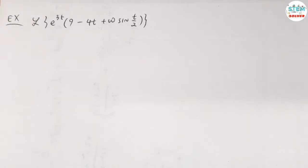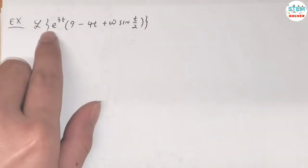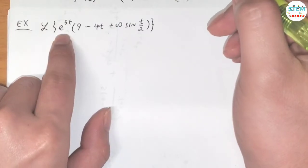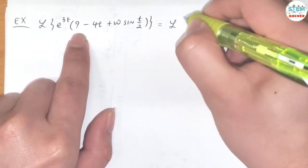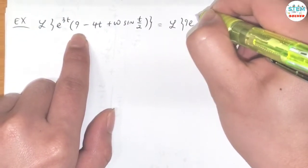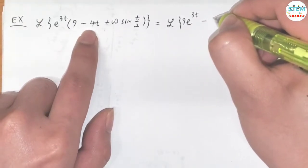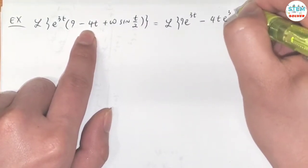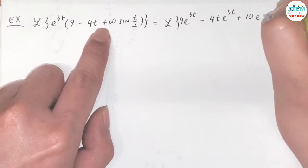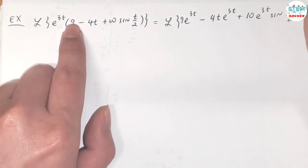The Laplace transform of e to the 3t times 9 minus 4t plus 10 sine of 1 half t. First of all, I'm going to distribute the e to the 3t inside the parentheses. So I have L of 9e to the 3t minus 4t e to the 3t plus 10e to the 3t times sine of t over 2.